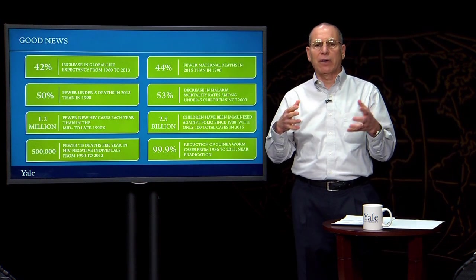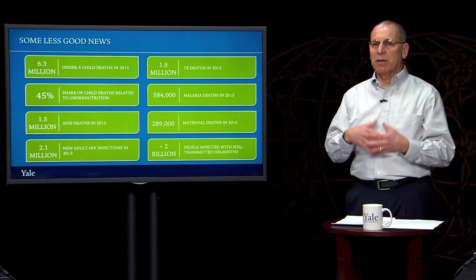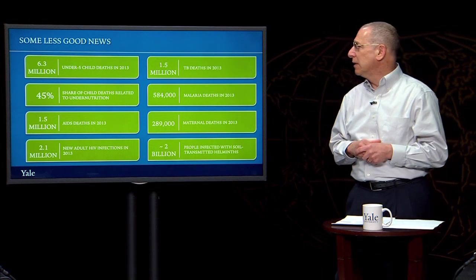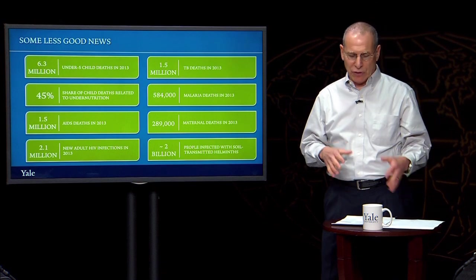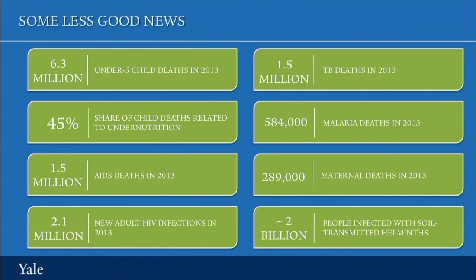Despite this very good progress, there are also some really important areas where there's been much less progress and there remains an important unfinished agenda in global health. There are still 6.3 million under-5 children who die every year in the world — about 17,000 under-5 children who die every single day.